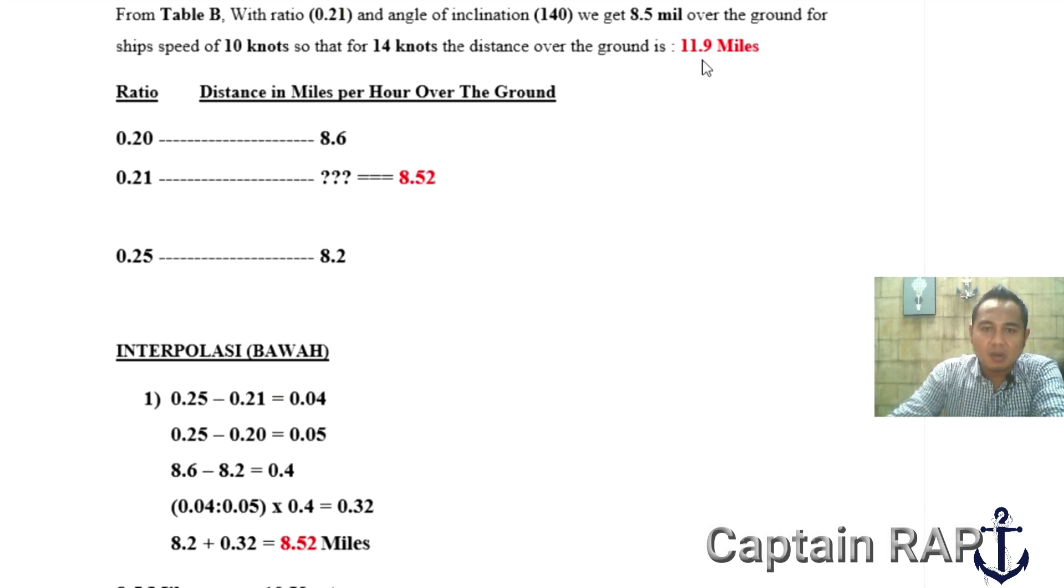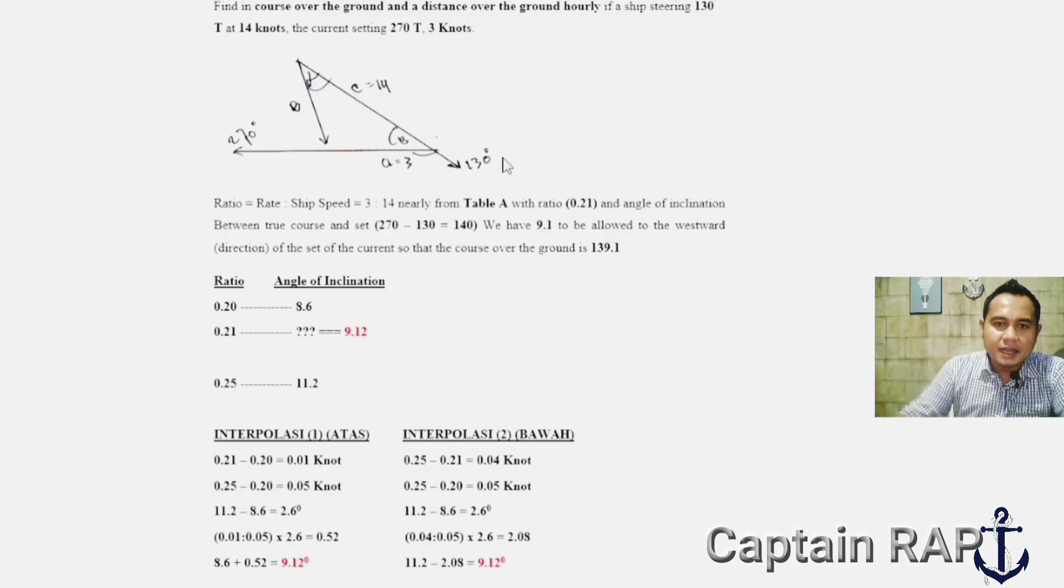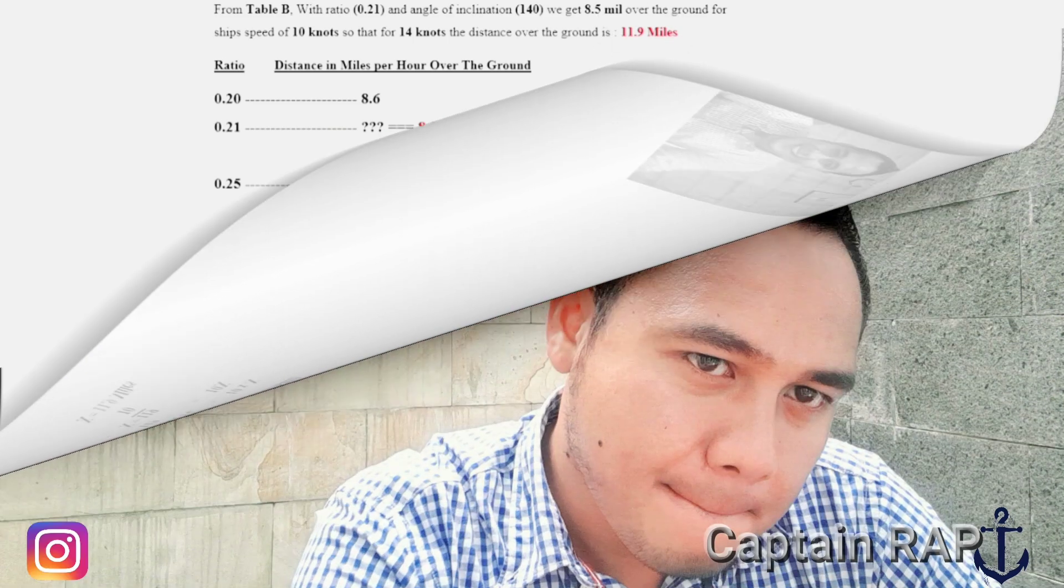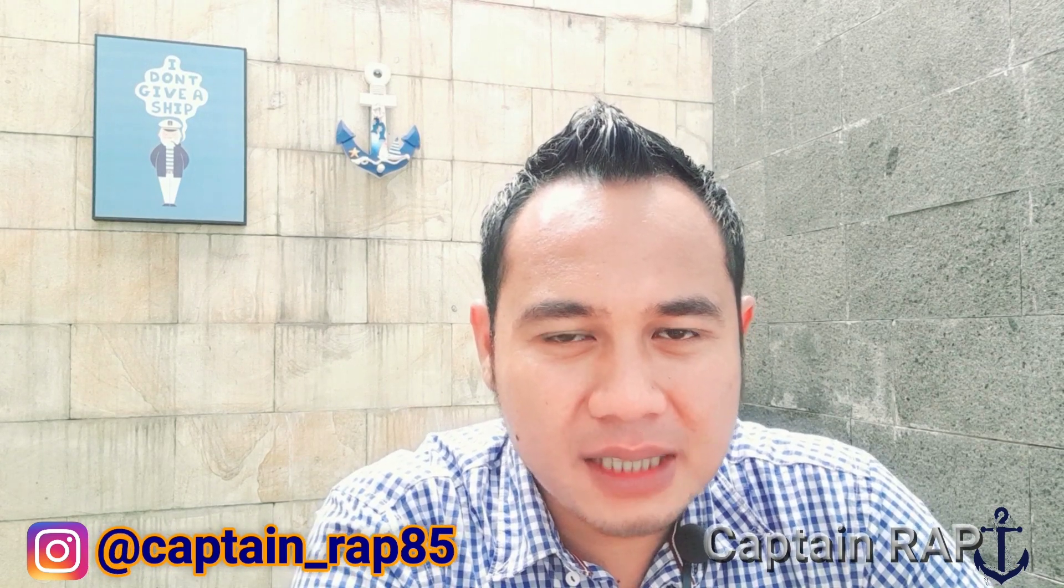Jadi benar jawabannya disini, distance over the ground untuk speed kapal 14 knot itu adalah 11.9 mil. Kesimpulannya, kapal yang berjalan dengan haluan 130 derajat kecepatannya 14 knot, mendapatkan arus 270 derajat dengan kecepatan arus 3 knot, maka course over the ground-nya adalah 139.1 derajat. Dan distance over the ground hourly-nya, jadi jarak yang bisa ditempuh setiap jamnya adalah 11.9 mil.